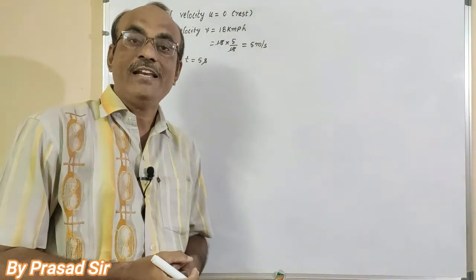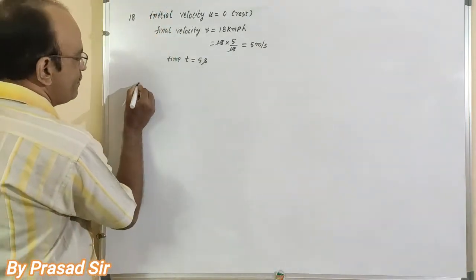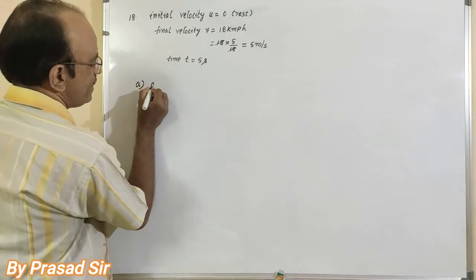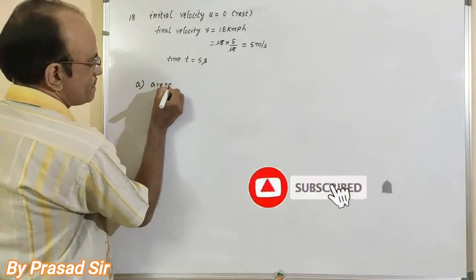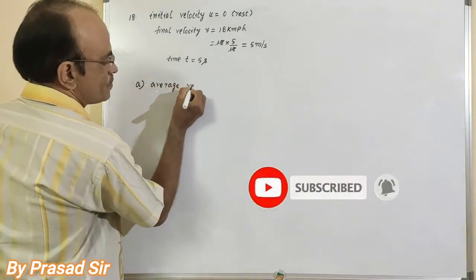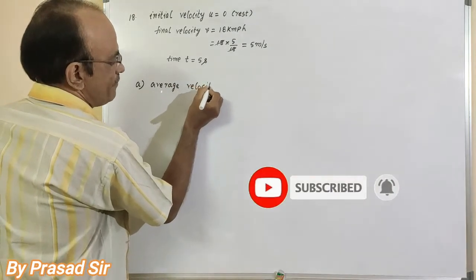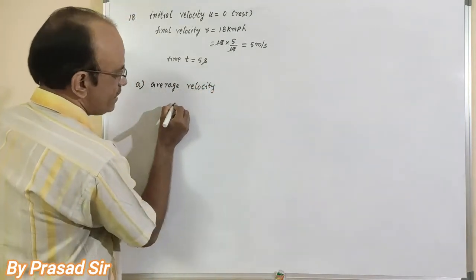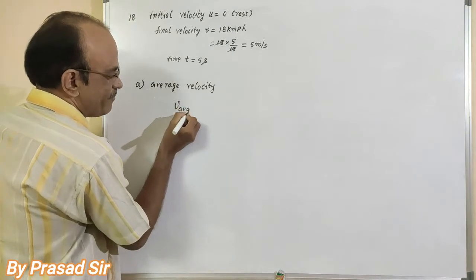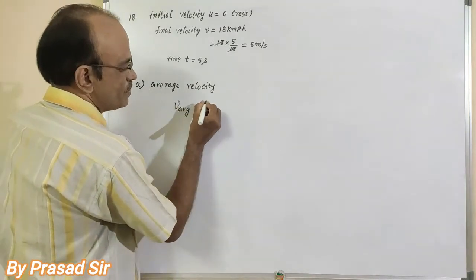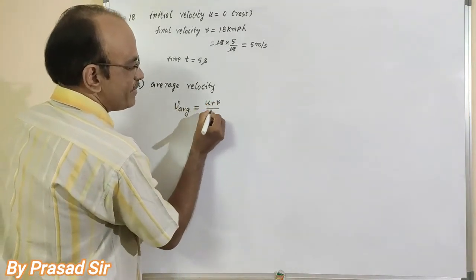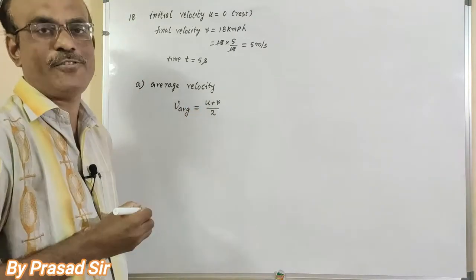So here we want to calculate average velocity. So first of all, (a) that is average velocity. V average is equal to u plus v divided by 2. That is the formula.